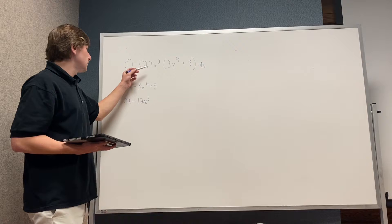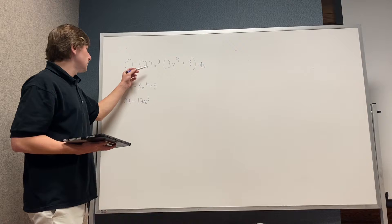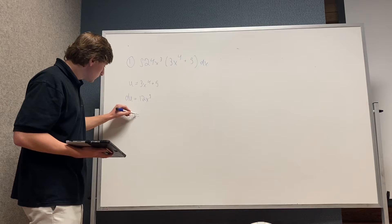And then after that, you're going to take whatever's in front here, multiply it to get 24x to the 3rd. So this will be simple, 2 du equals 24x to the 3rd.